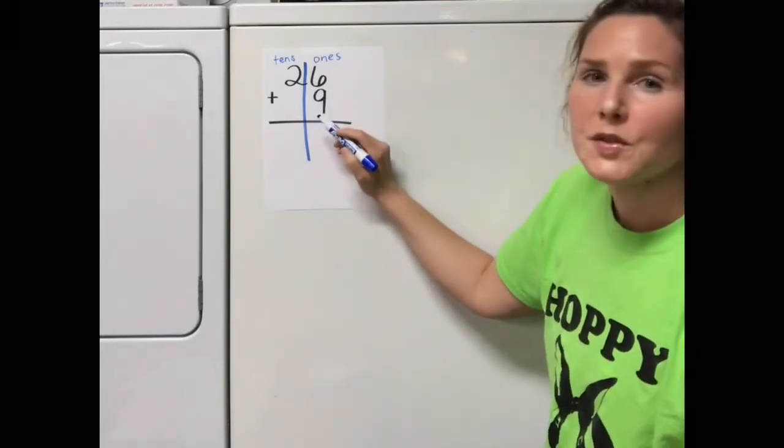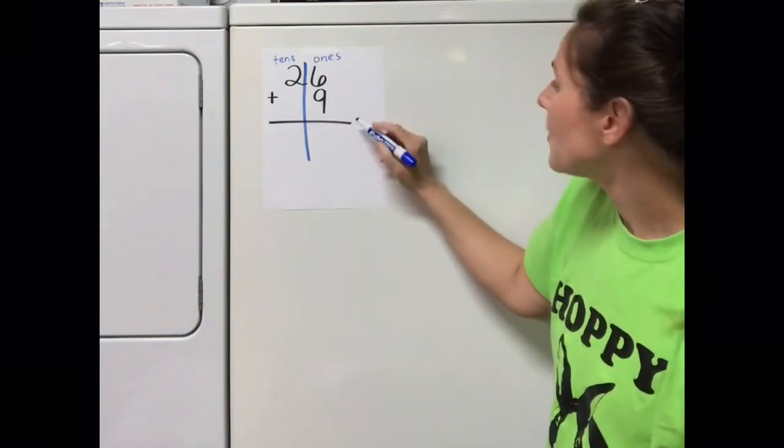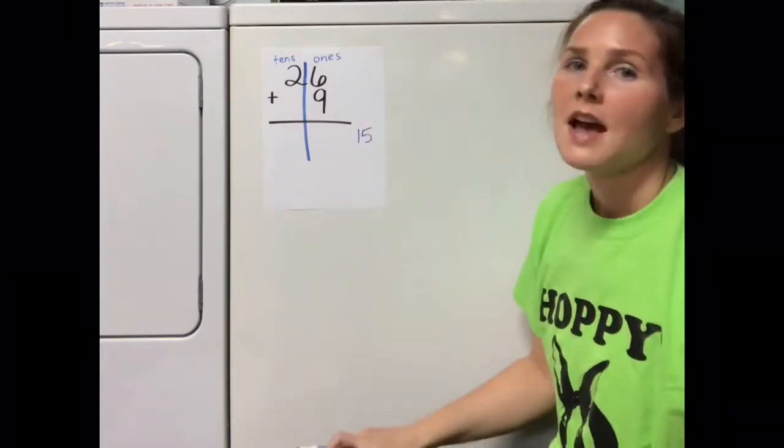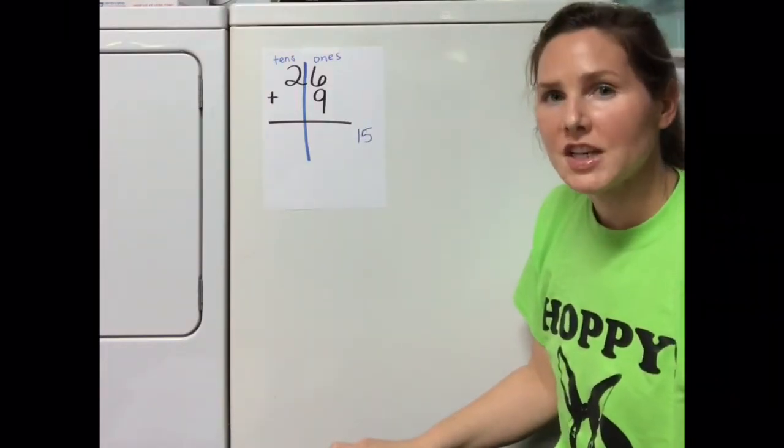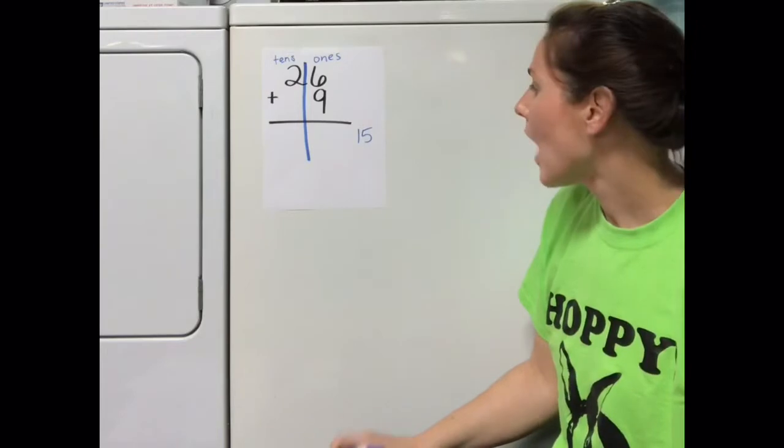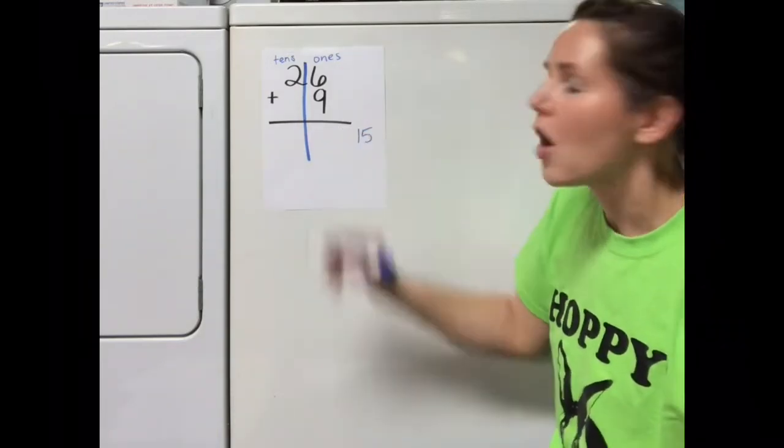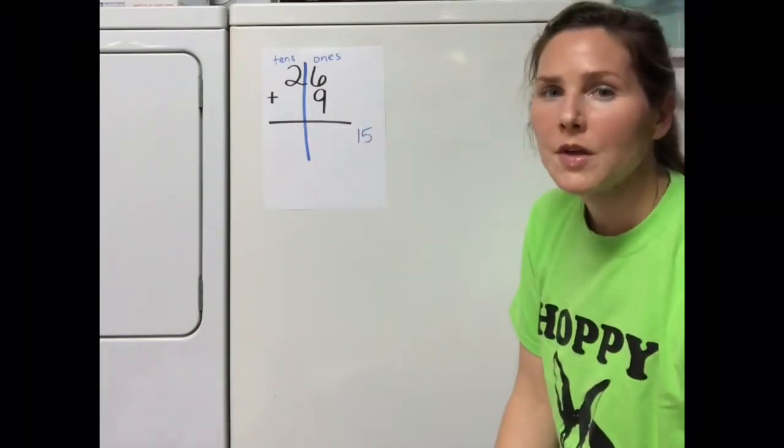So the ones column says 6 plus 9. 6 plus 9 is equal to 15. Now here's the problem: 15 is two digits. I can only put one digit into each column, so I can't write the number 15 all into the ones column.